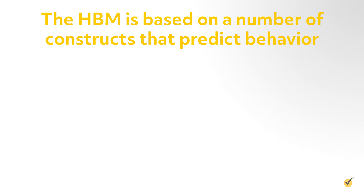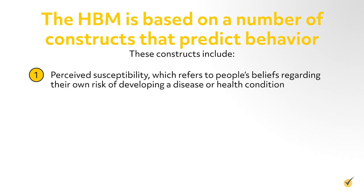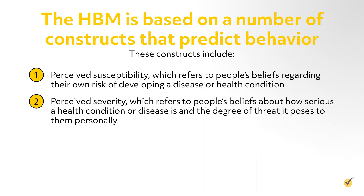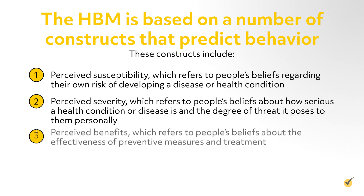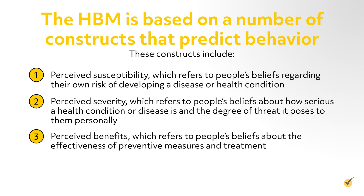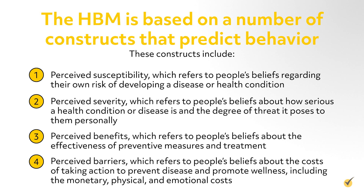The HBM is based on a number of constructs that predict behavior. These constructs include perceived susceptibility, which refers to people's beliefs regarding their own risk of developing a disease or health condition; perceived severity, which refers to people's beliefs about how serious a health condition or disease is and the degree of threat it poses to them personally; perceived benefits, which refers to people's beliefs about the effectiveness of preventive measures and treatment; and perceived barriers, which refers to people's beliefs about the cost of taking action to prevent disease and promote wellness, including the monetary, physical, and emotional costs.